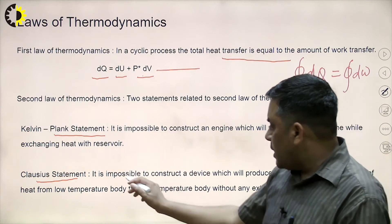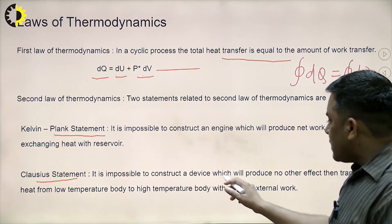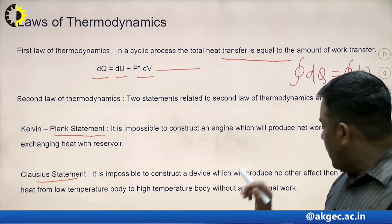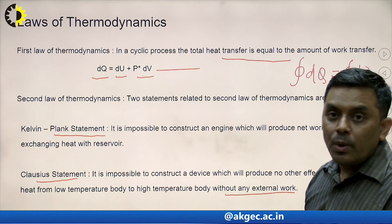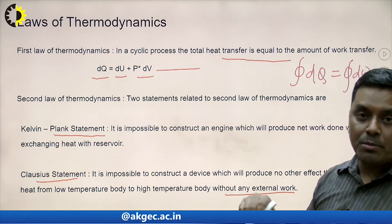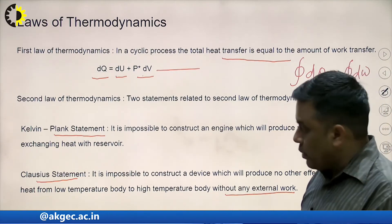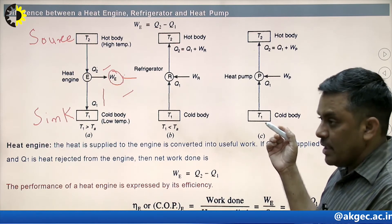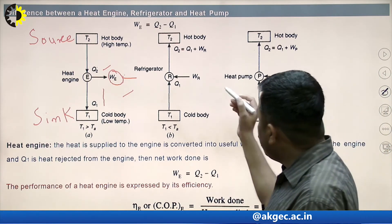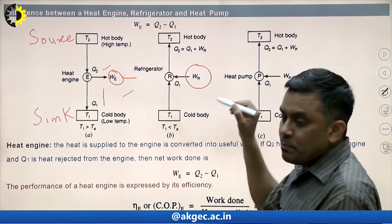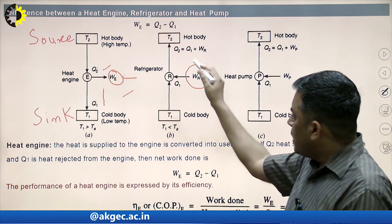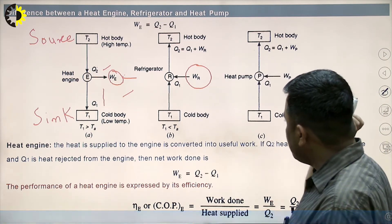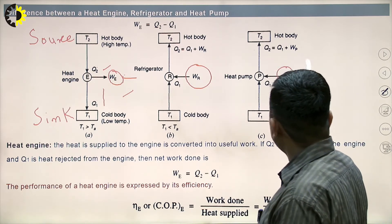The Clausius statement says it is impossible to construct a device that produces no other effect than the transfer of heat from a low temperature body to a high temperature body without any external work. We know heat transfer from high to low temperature is spontaneous, but transferring heat from low to high temperature requires some work input. It is possible but requires work. On the basis of this statement, two devices — refrigerator and heat pump — are designed.